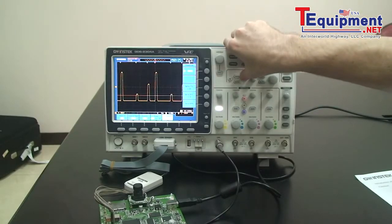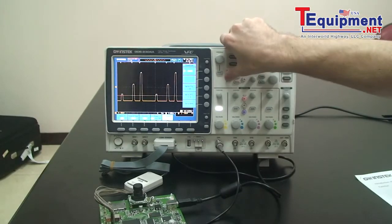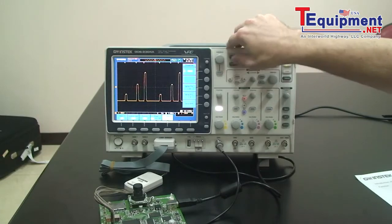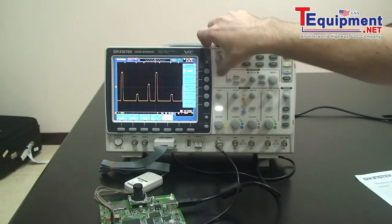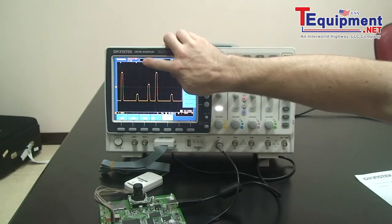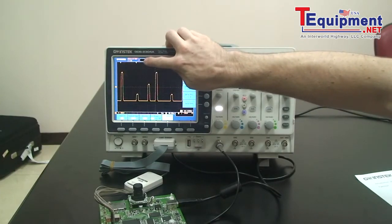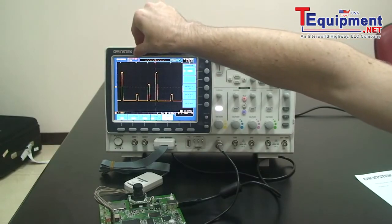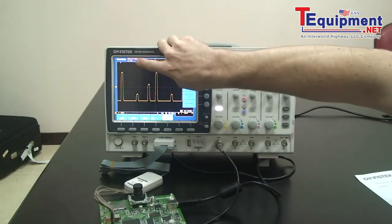We can use the left and right arrow keys to go through each event. At the top here, we have the status icon. It tells us how many events are captured throughout the whole memory length. In this case, it's 167, and currently we are on event number 84.